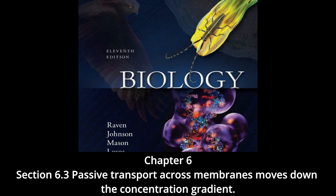Osmosis: the cytoplasm of a cell contains ions and molecules — sugars, amino acids — dissolved in water, forming an aqueous solution. Water molecules and solutes both diffuse from high to low concentration. When two regions are separated by a membrane, what happens depends on whether solutes can pass freely. Most solutes — ions and sugars — are not lipid soluble and cannot cross the lipid bilayer. Even water molecules, which are very polar, cannot cross a lipid bilayer directly; water flows through specialized channels called aquaporins.